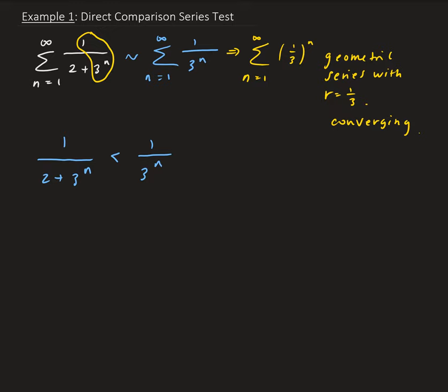So now, this is a true statement, and actually we can verify this algebraically. This is the same as, you can rewrite this as three to the n less than two plus three to the n.